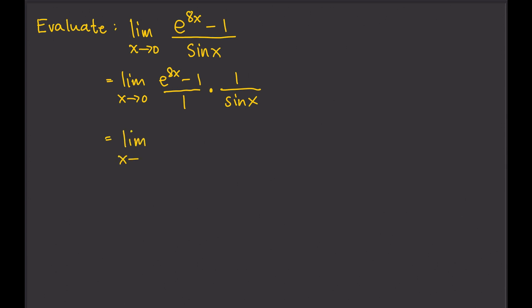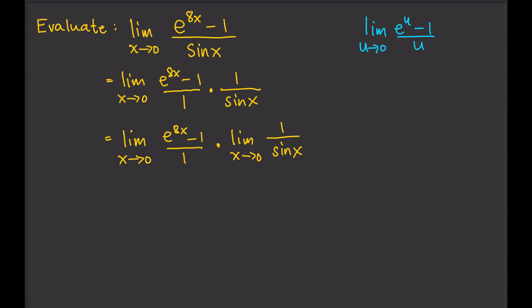Remember, the limit of a product of two separate functions is just equal to the limit of the individual functions multiplied together. So that will be the limit of e to the 8x minus 1 divided by 1, times the limit as x approaches 0 of 1 over sine x. Now we have an exponential here, and we can use a known result: the limit of e to the u minus 1 divided by u as u approaches 0 is equal to 1. So our goal now is to make the denominator equal to the exponent of e, which is 8x.